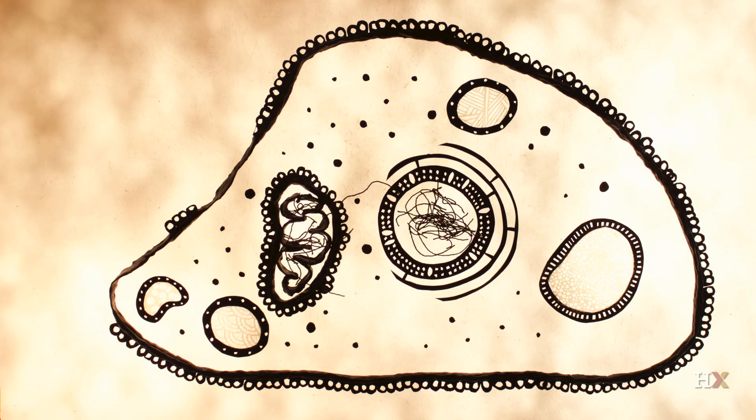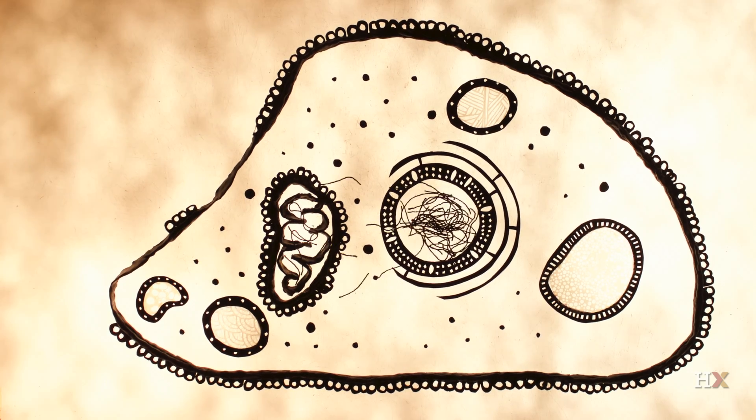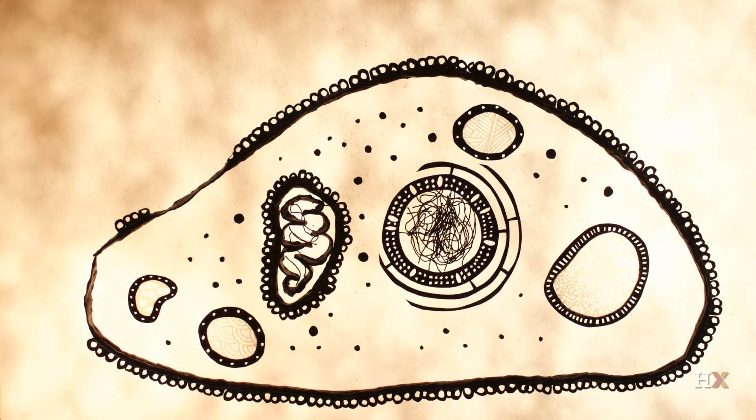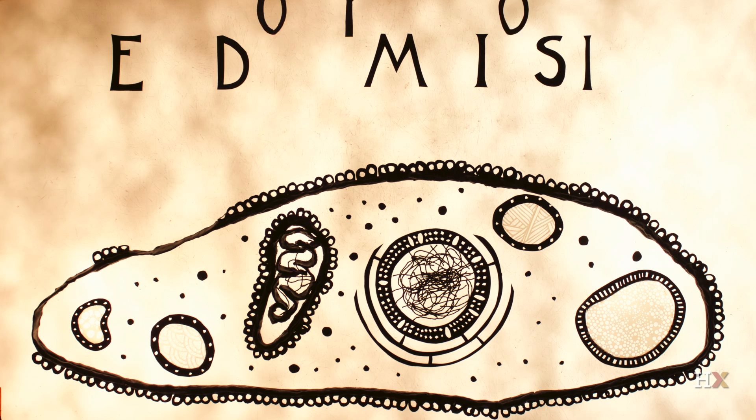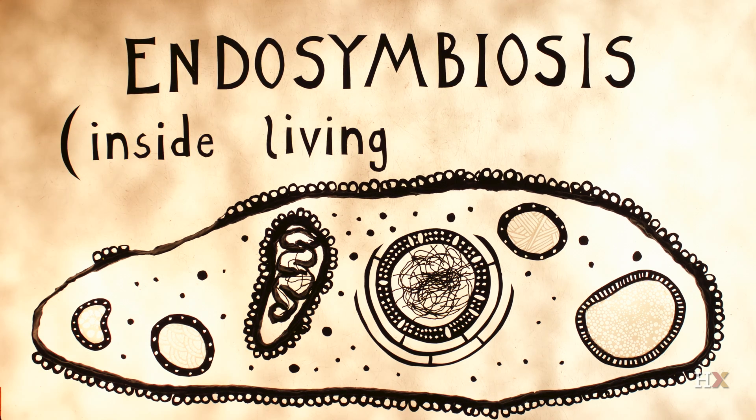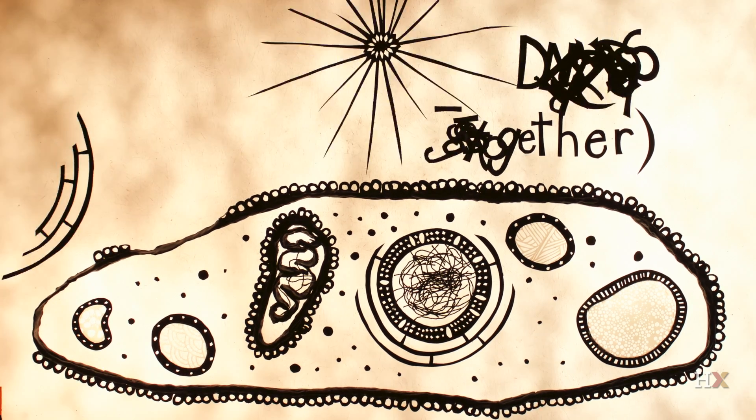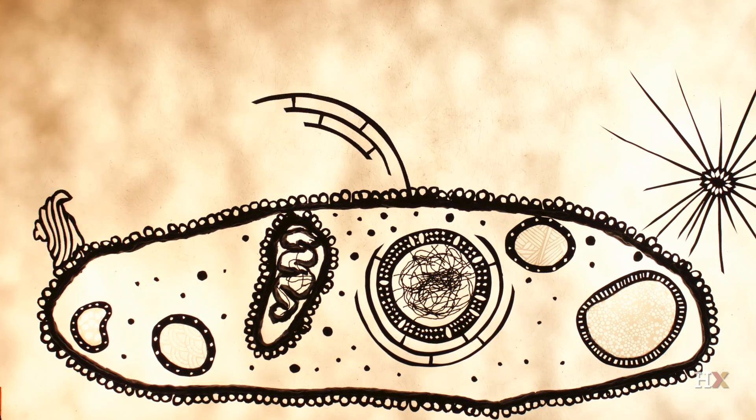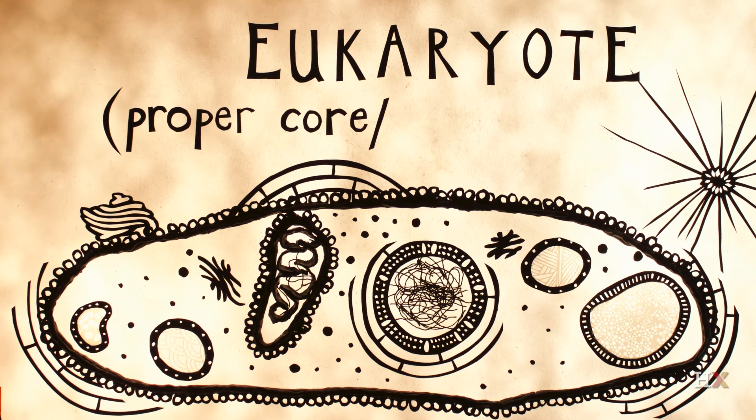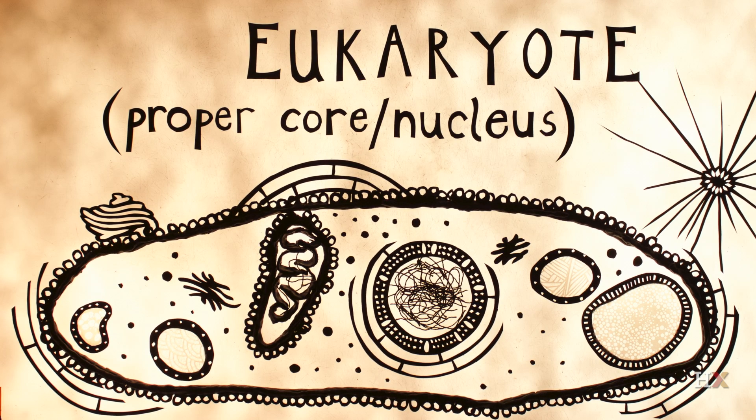Over generations, the two cells' descendants exchanged DNA and became dependent on each other for survival, living as one organism in an evolutionary process called endosymbiosis. This mutually beneficial relationship only deepened over time, allowing the evolution of what we know today as the eukaryote, with a true nucleus and organelles that complete specialized tasks.